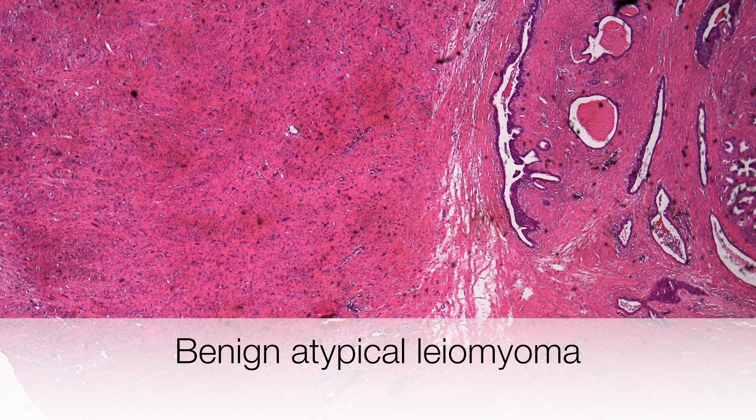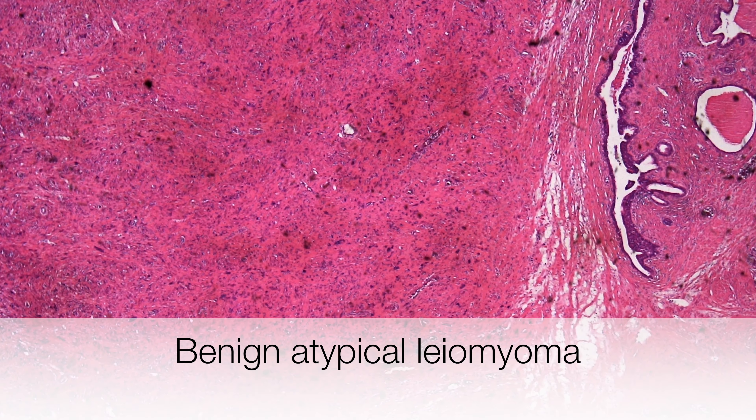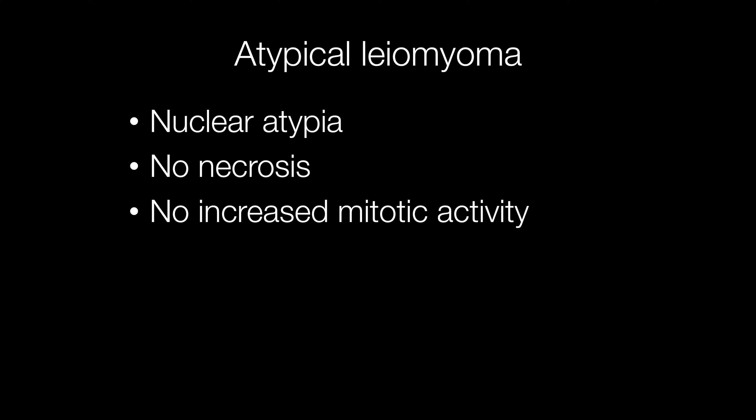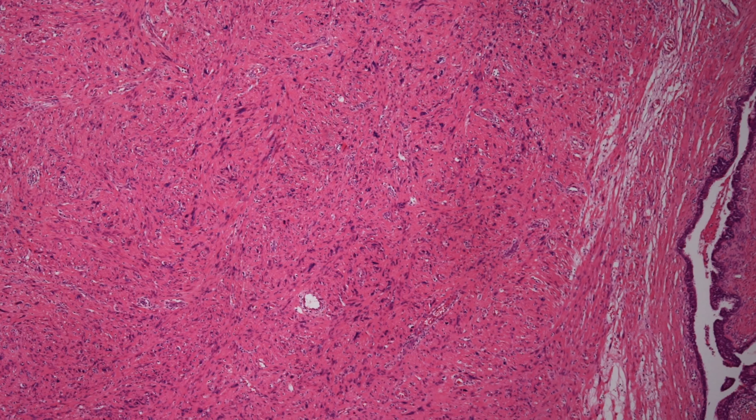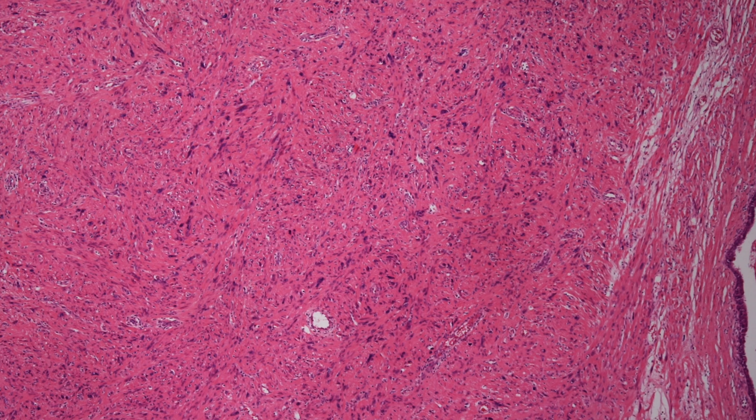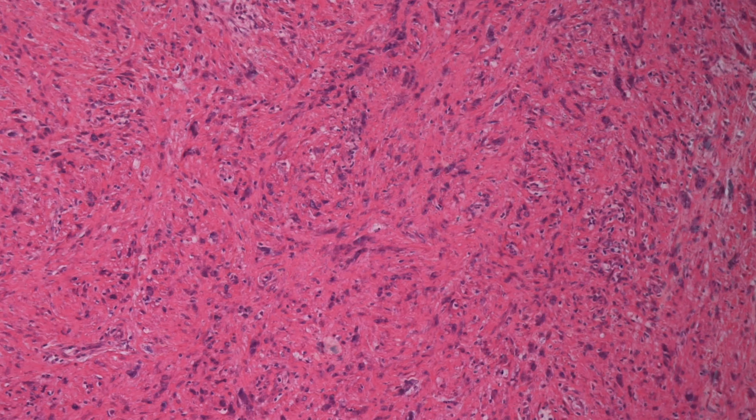Case number 10 was from a male of 69 who had a TURP. The diagnosis here was an atypical leiomyoma. The nuclei, as the name suggests, show nuclear atypia; however, there is no necrosis and no increased mitotic activity. The lesion is benign. Here you can see a nodule of smooth muscle cells with pleomorphic rather atypical nuclei but no necrosis and no mitotic activity. And this is the actin stain showing positivity, indicating smooth muscle.